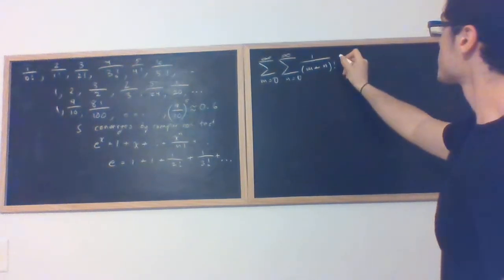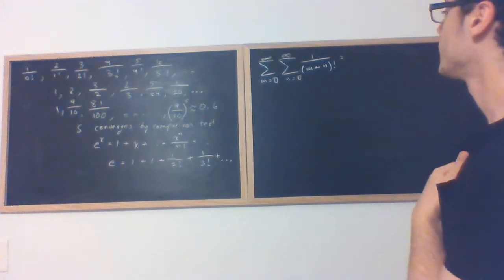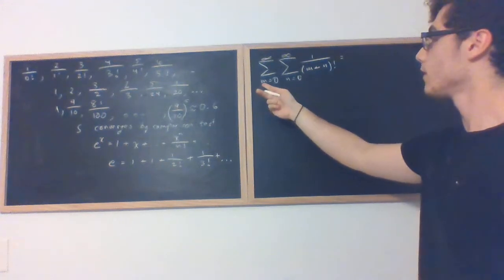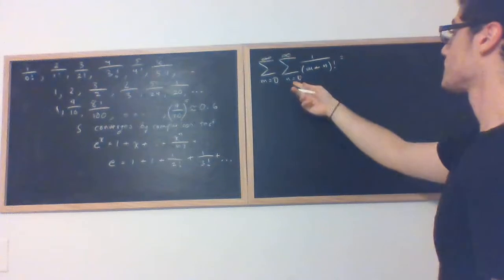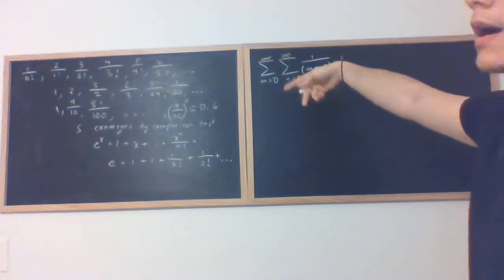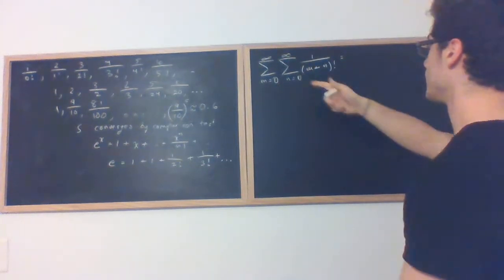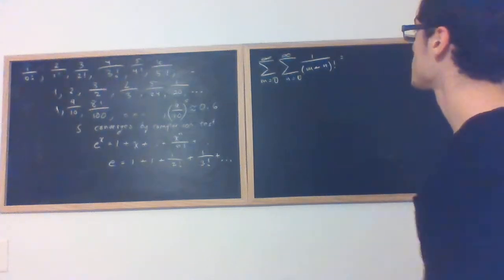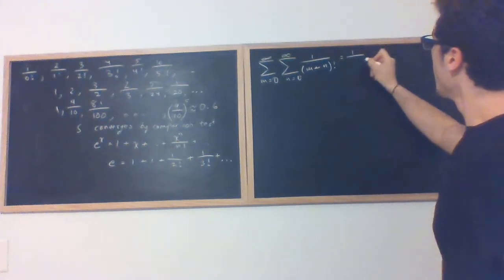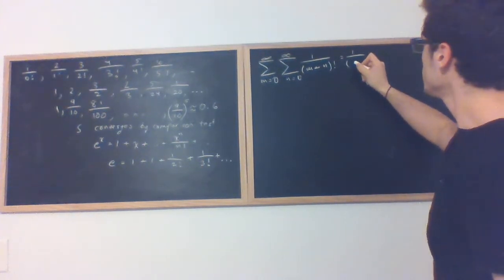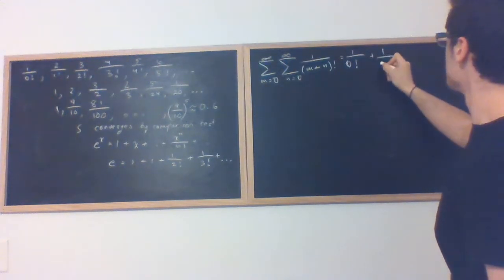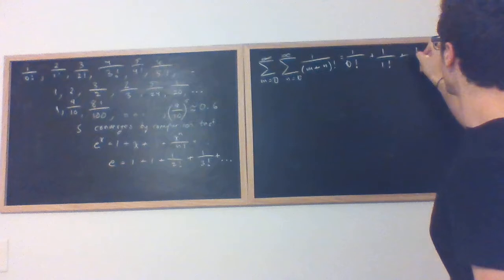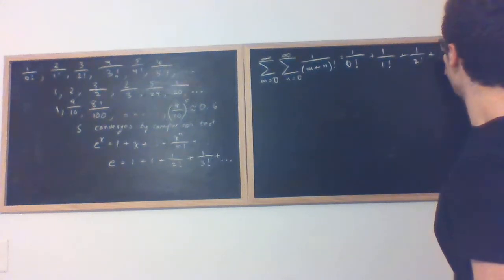So this is a double sum, so we could hold the outer indices constant and consider specific indices on the inner sum. First we will start with 1 over 0 plus 0 factorial, which is just 0 factorial. Then that will proceed to 1 over 1 factorial and 1 over 2 factorial and so forth.